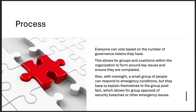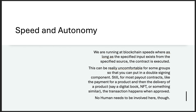There are no delays — it's not like wanting to buy a security system for the company and waiting a year. With this process, you make the proposal, everyone votes, and if it passes, it's immediately enacted. As for speed and autonomy: you're running at blockchain speeds. As long as the specified input exists from the specified source — like an oracle — the contract is executed. For some people that's uncomfortable, but you can do double-signing and have a human press the approval button to slow things down.